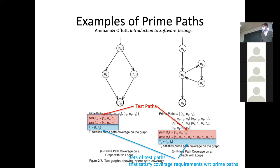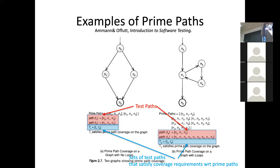Could anyone give me a path from N0 through N2, one or more paths, that will cover all of these prime paths? N0, N1, N3, N4, N1, N2 — that's right. That would in fact cover all of it. If you could come up with the inputs that will cause it to go all the way through that, it would achieve coverage of all the prime paths.